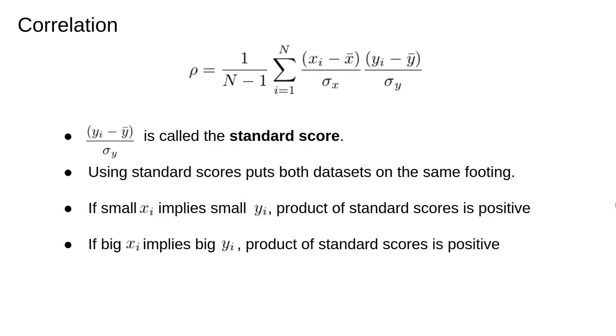If we observe that whenever xi is big, that means it's larger than the mean, so is yi. In that case, both standard scores are positive, and their product is positive.